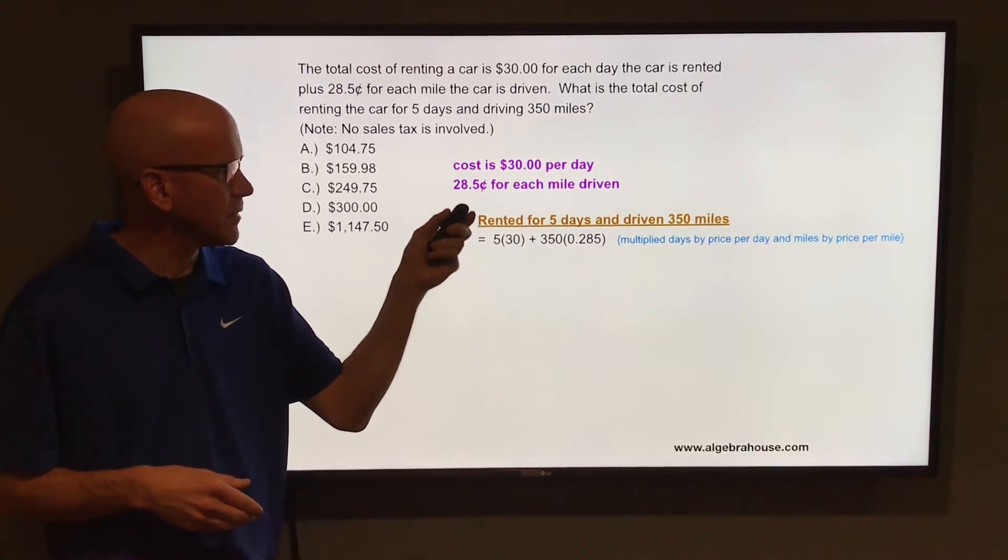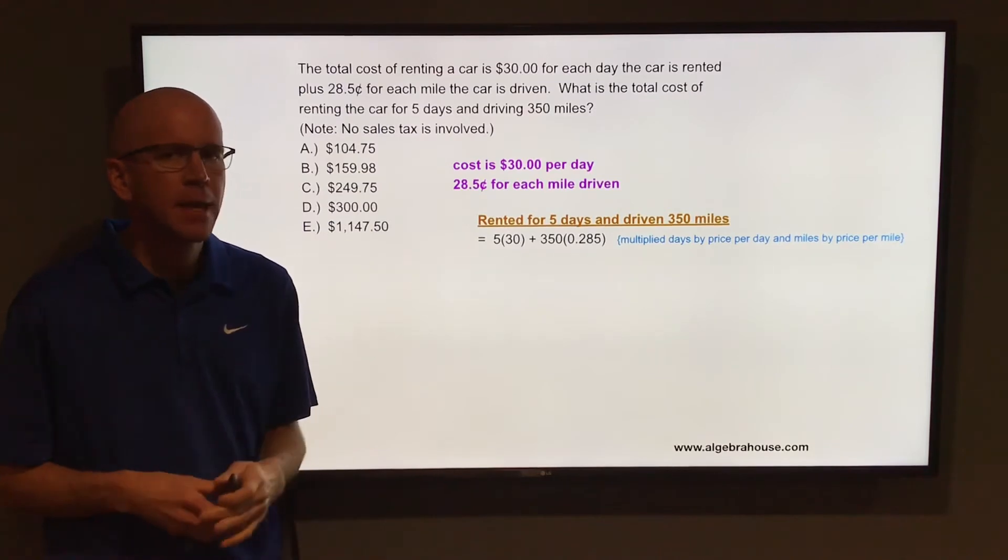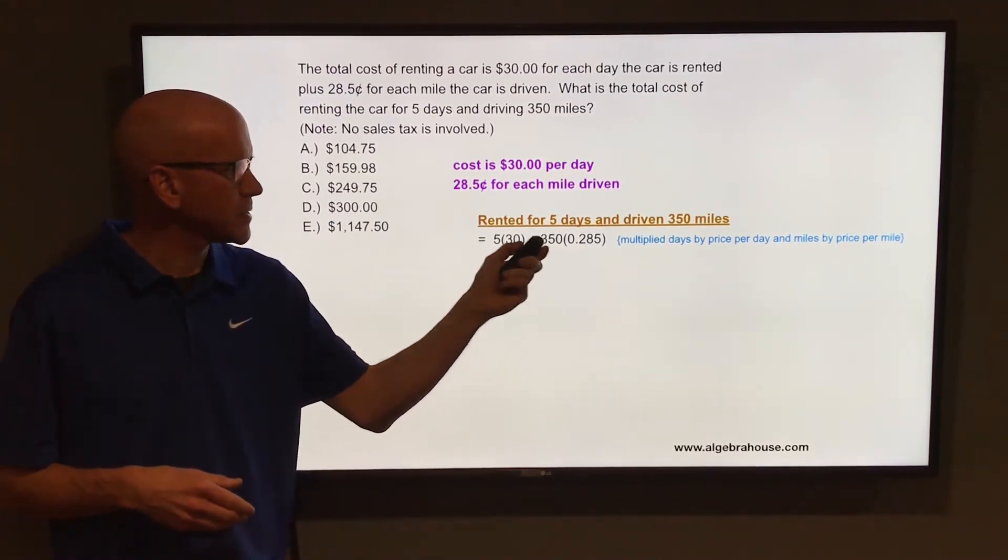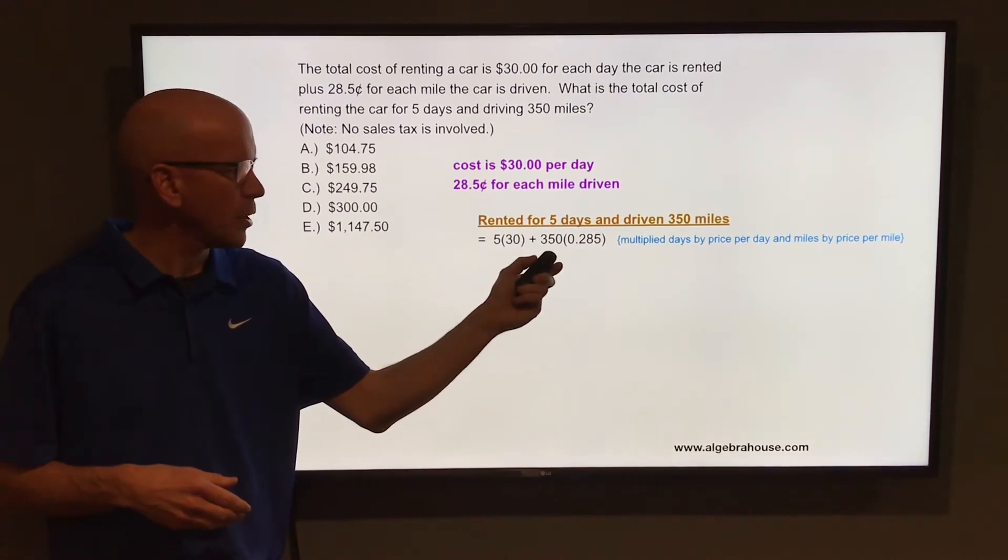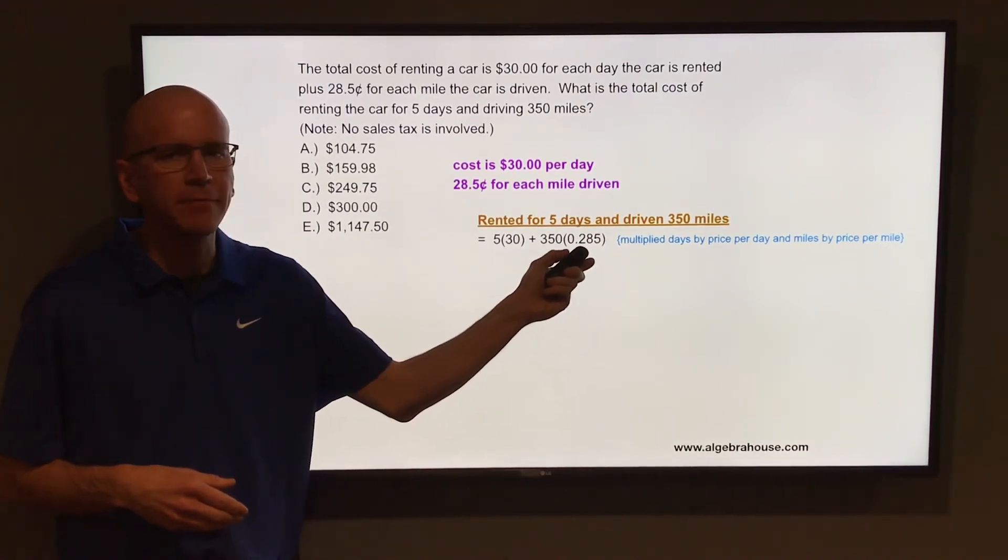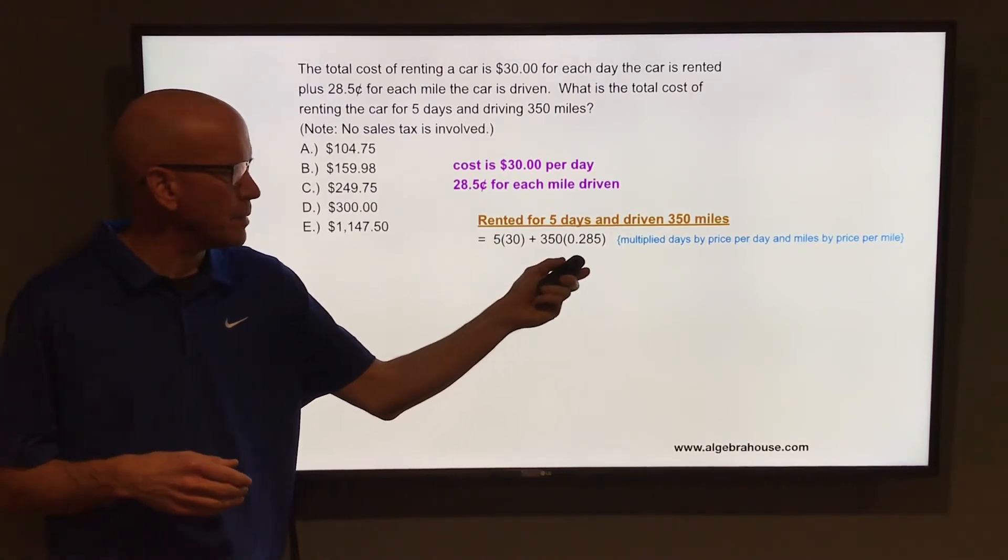So if you rented for five days and the cost is $30 for each day, multiply five by 30. And you drove 350 miles - the cost is 28.5 cents for each mile the car is driven - multiply 350 by 0.285. So 28.5 cents in terms of dollars would be 0.285.